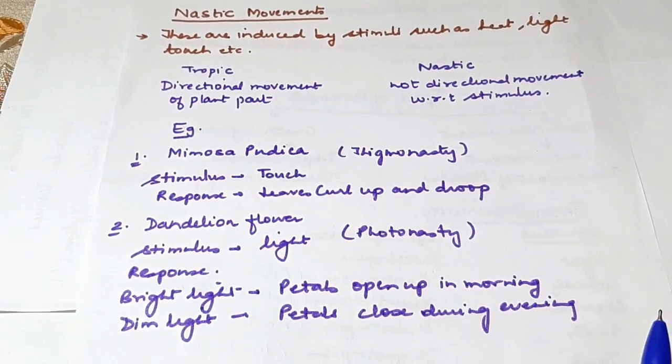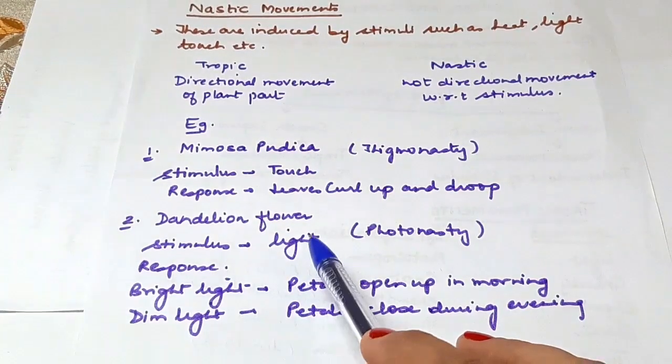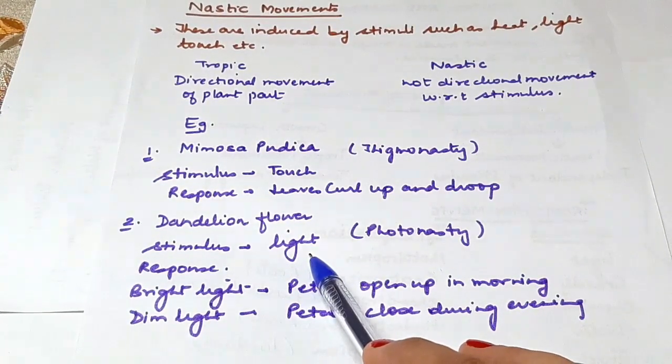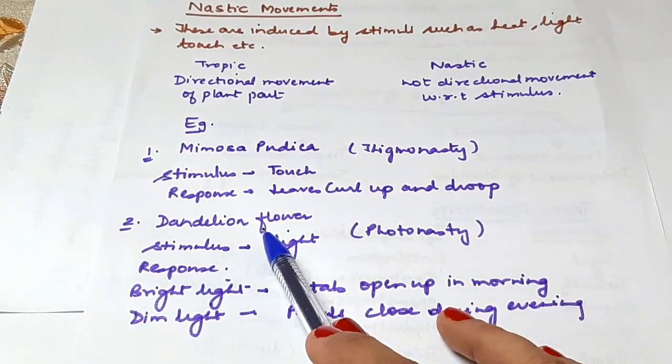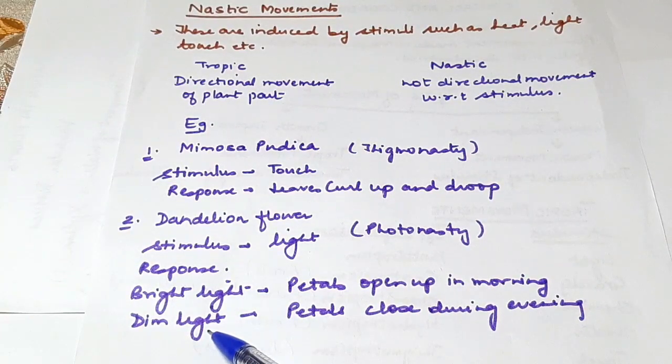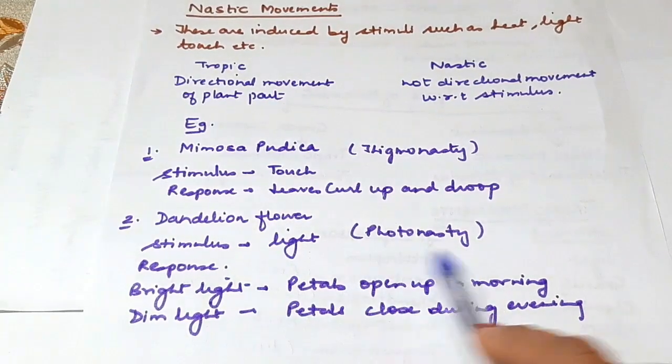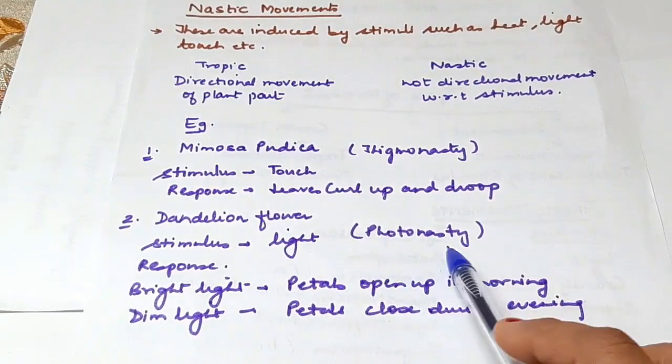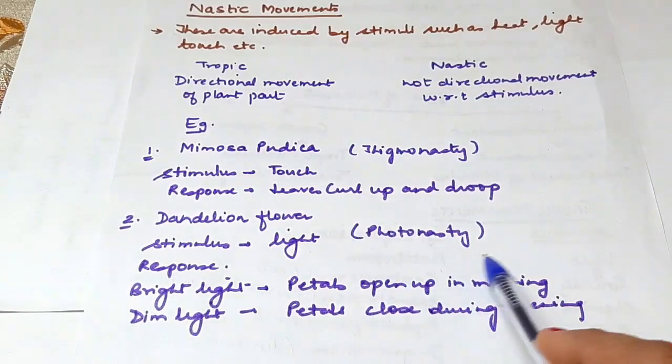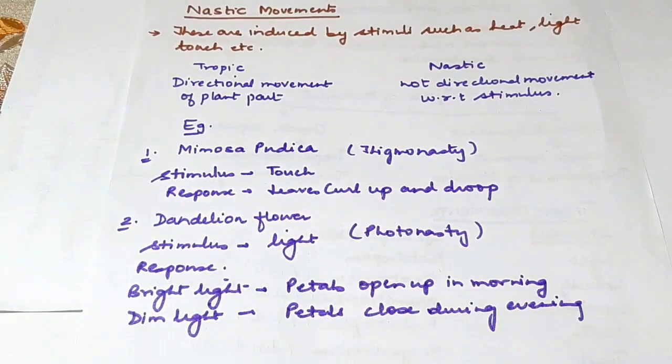Another example is dandelion flowers. In this case, the stimulus is light. In bright light, the petals of dandelion flowers open up in the morning. In dim light during evening, the petals close. This is called photonasty - photo means light and nasty is nastic movement. I hope this is clear. If you have any doubts, please write in the comment section. Thank you.